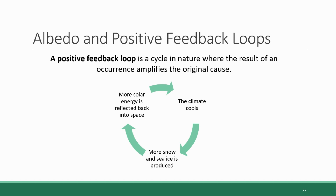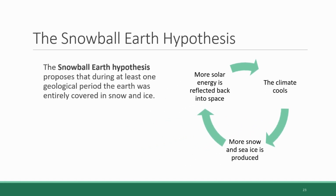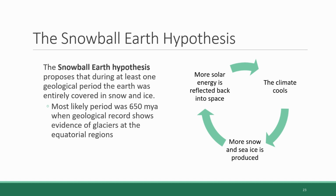This is thought to have been the driving factor in a historical geological state known as the Snowball Earth. The Snowball Earth hypothesis proposes that during at least one geologic period, the surface of the Earth was virtually entirely covered in snow and ice. The most likely period was 650 million years ago, because the geological record shows evidence of glaciers at the equatorial regions of the Earth. The emergence of the Snowball Earth would have been brought about by a runaway positive feedback loop of a cooler climate leading to a higher albedo, and so on until the whole Earth was ice and snow.